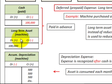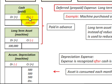For this example we're going to pay for it in cash, so we debit the long-term asset — the machine — for one hundred thousand dollars. The corresponding credit account would be cash, since we paid for it in cash, and a credit reduces the cash balance.